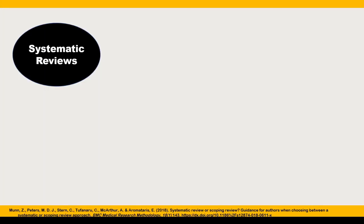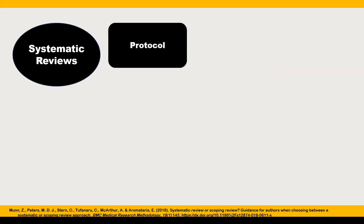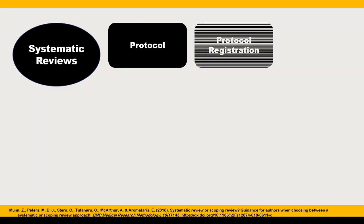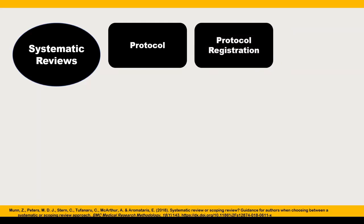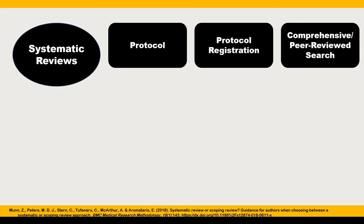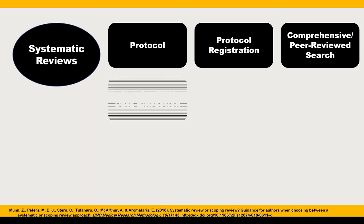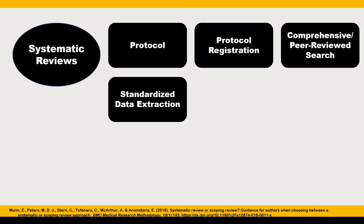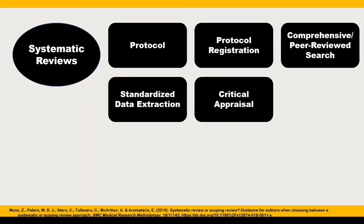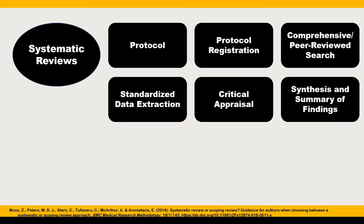a systematic review will have a protocol from which no deviations are encouraged. That protocol will be registered, ideally in Prospero, a protocol registration platform. The review's accompanying literature search aims to be as comprehensive as possible. Standardized data extraction forms are used. In a systematic review, critical appraisal or risk of bias assessment is mandatory. The result is a synthesis and summary of findings that can inform decision-making, policy, and practice.